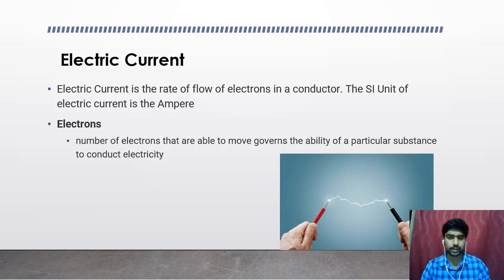So what is electric current? Electric current is nothing but the rate at which the electrons flow in a conductor. Let's take an example of a person moving in a vehicle.